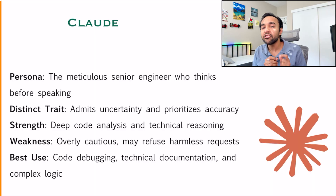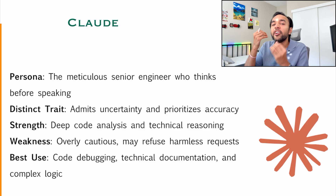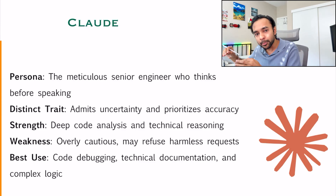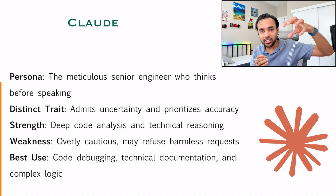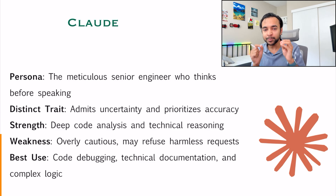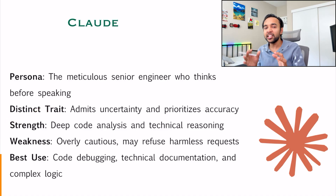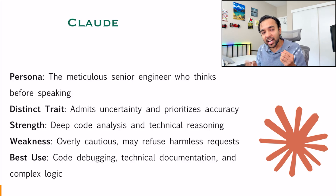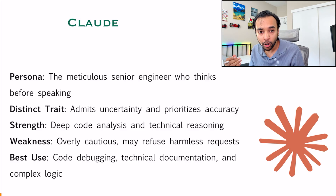The other model everyone has been talking about is Claude, offered by Anthropic. This model talks in a very friendly manner, lists out all of the points, and is very cautious. For programmers, it acts like a senior engineer who looks at multiple aspects and guides you to a correct solution. It will even admit, 'I am uncertain about this, proceed with caution.' That makes it a great use case when you want to be careful, especially when deploying something at work.